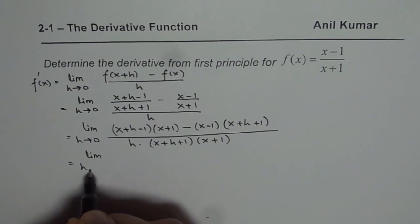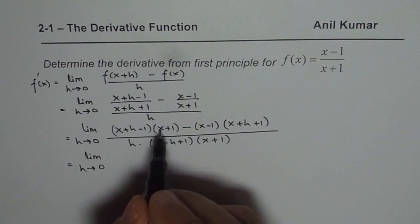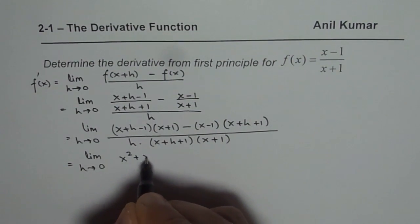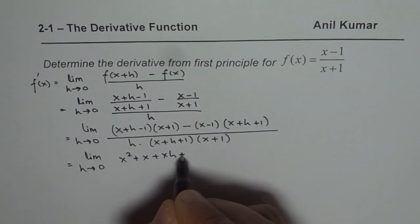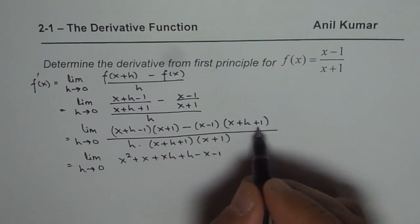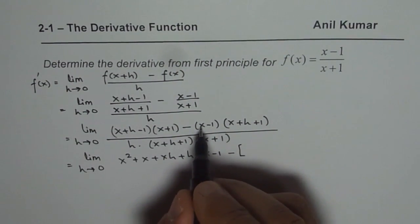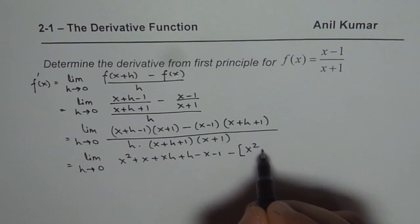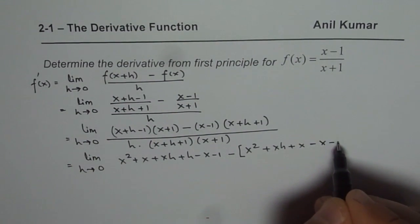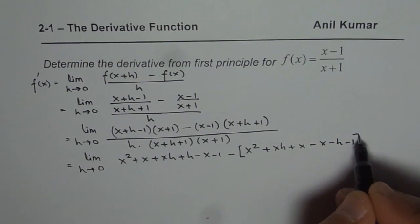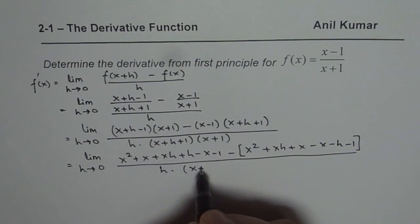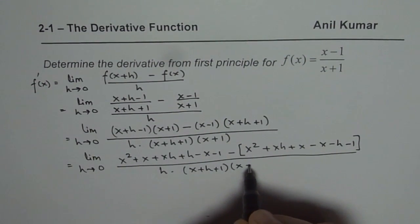Now let us expand the numerator. Multiplying out the first bracket gives: x squared plus x plus x times h plus h minus x minus 1. Then subtracting the second bracket: minus x squared minus x h minus x, and with the minus 1 factor we get minus x minus h minus 1.